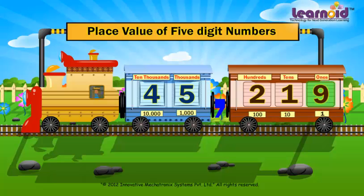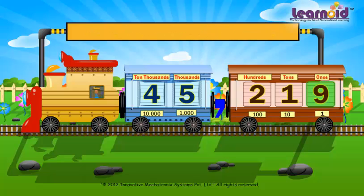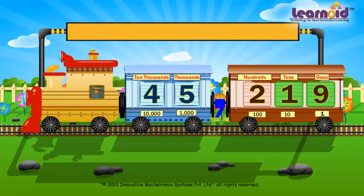Number 9 is in the 1's window. Its place value is 9. Number 1 is in the 10's window. Its place value is one 10's, or 10.